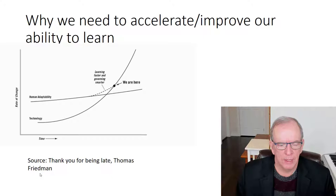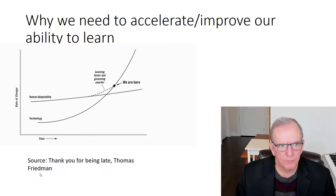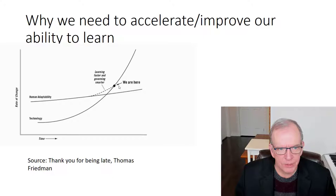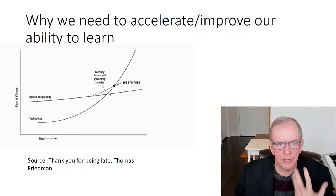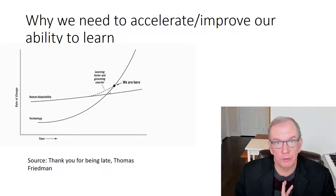I like this graph from the book 'Thank You for Being Late' by Thomas Friedman — excellent book, highly recommended. It looks at how the world is changing in a multitude of ways. Friedman interviewed Astro Teller, who was the head of artificial intelligence at Alphabet/Google, and Teller noted that the rate of change is outpacing human adaptability. Learning faster and governing smarter become big issues — just like my traffic light example: things change so rapidly that we don't have the infrastructure, laws, or regulations in place to govern them yet.